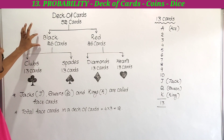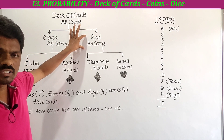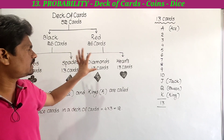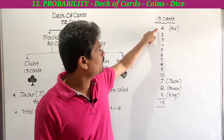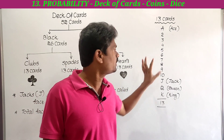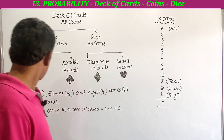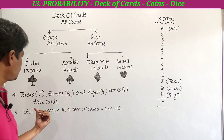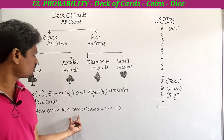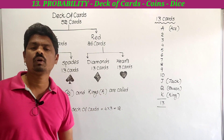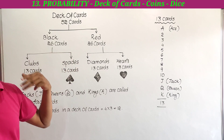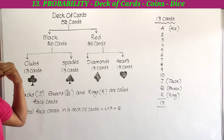Let's recap: total set of playing cards is 52. Black color cards 26, red color cards 26. Black clubs 13, black spades 13, red diamonds 13, red hearts 13. In these 13 cards: ace, 2, 3, 4, 5, 6, 7, 8, 9, 10, jack, queen, king. Jacks, queens, and kings are called face cards — total 4 suits, each with 3 face cards, so 12 face cards in a deck.